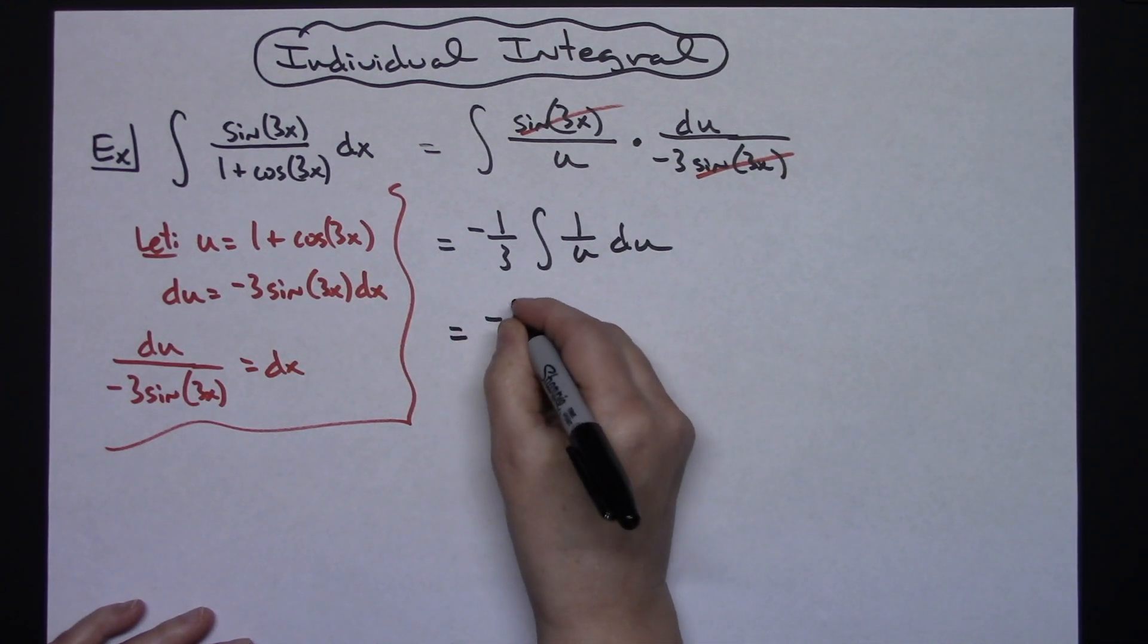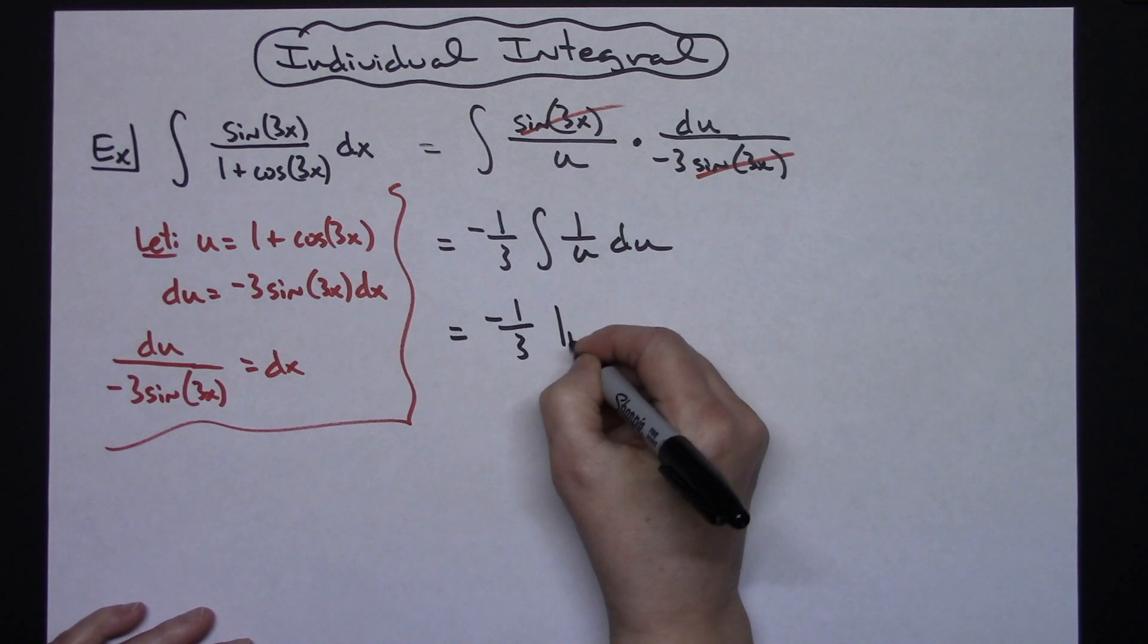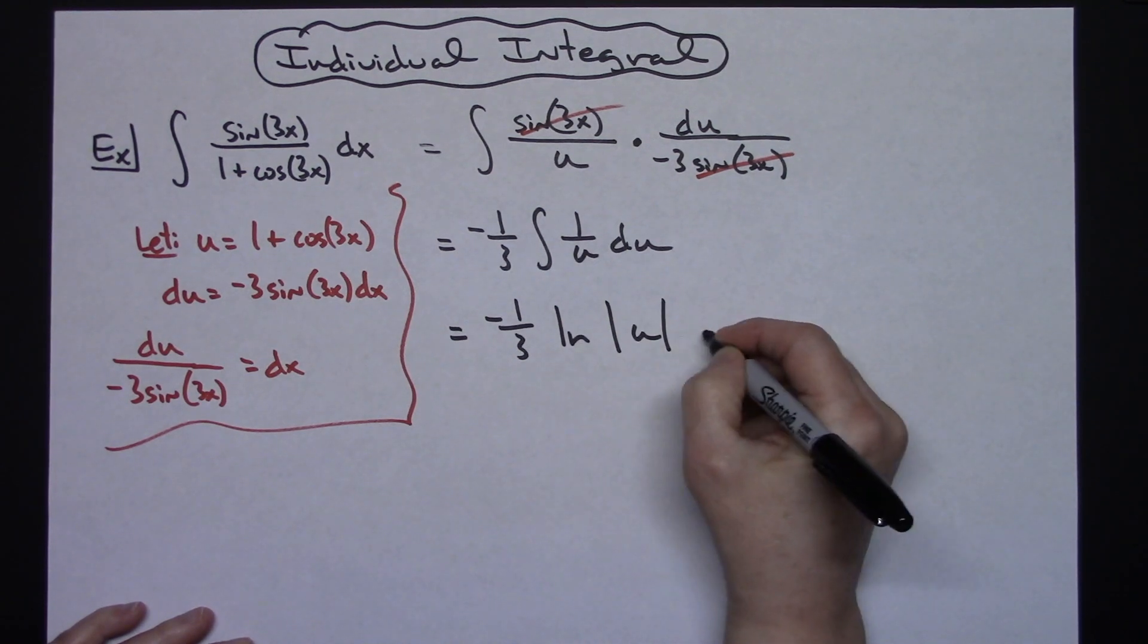So when we go ahead and integrate we'll have a negative 1/3 times natural log absolute value of u plus c.